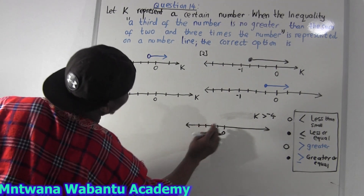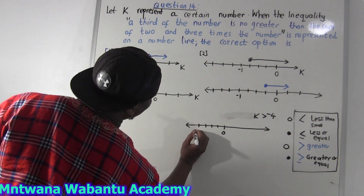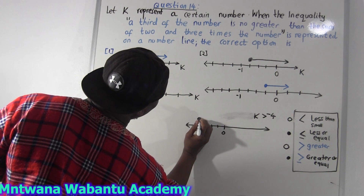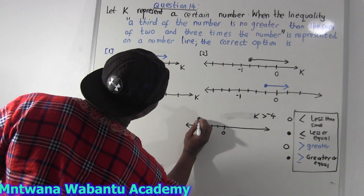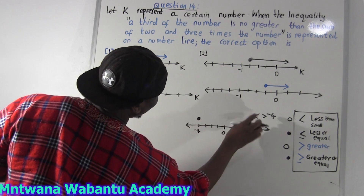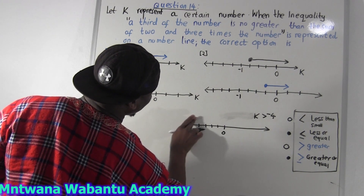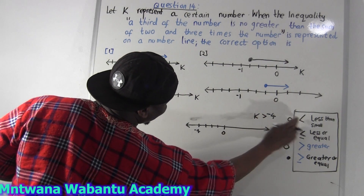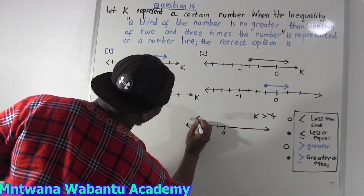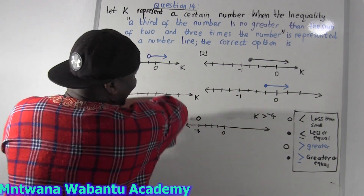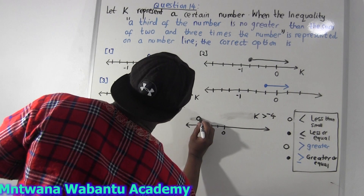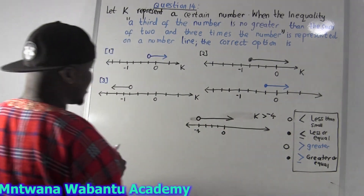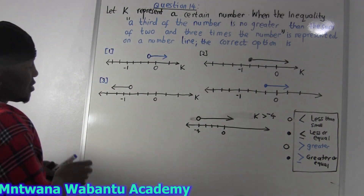So this is negative 4. If you say greater than negative 4, you start from there — you put an open circle because it's strict greater than. Greater means you go that way — to the right.